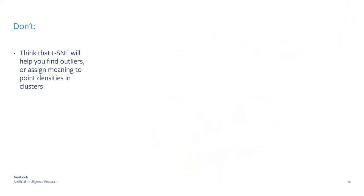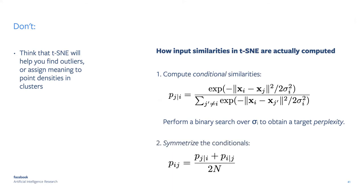T-SNE will not help you find outliers, and you cannot assign meaning to point densities within clusters. We designed t-SNE very explicitly to eliminate outliers — to pull them in with the rest of the data — because if you have a nice visualization plus a few outliers, the scatter plot would show only those outliers and you couldn't see anything else. So you really cannot use t-SNE as an outlier detection method.